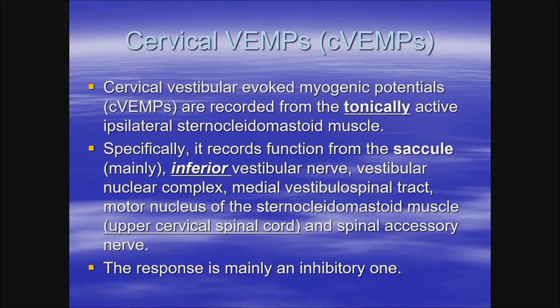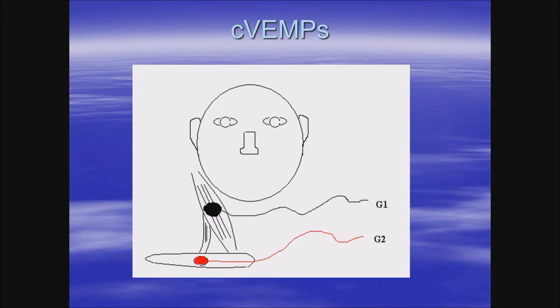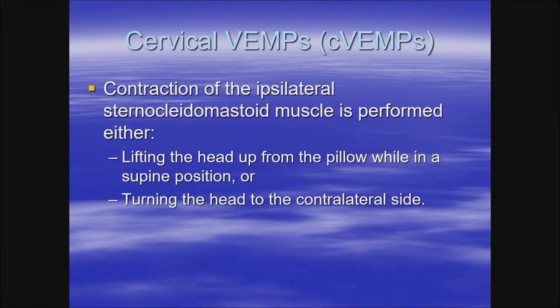The cervical VEMP response is an inhibitory one. The setup is very simple — a three-electrode setup where the active electrode is placed usually on the midpoint of the sternocleidomastoid muscle or a little higher up, the reference on the clavicle, and the ground either on the forehead or the sternum. You have to contract the sternocleidomastoid muscle at the same time because the cervical VEMP is an inhibitory response, meaning you inhibit the ongoing contraction.